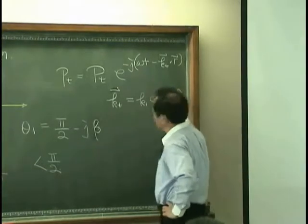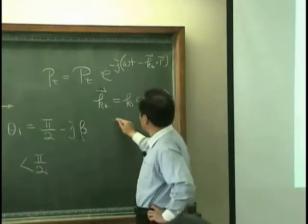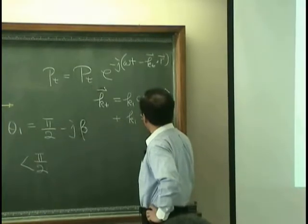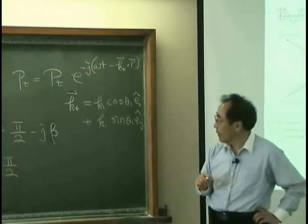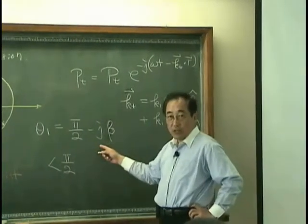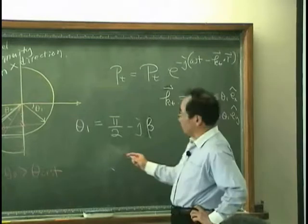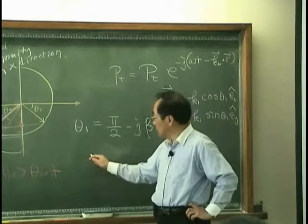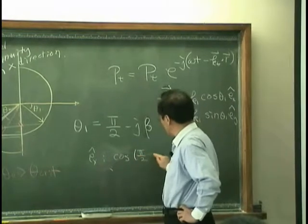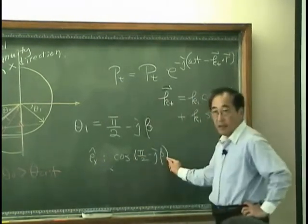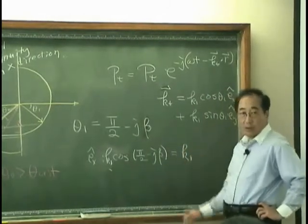Cosine theta 1. And I denote Ex is the unit vector in x direction. And then I can write another wave number vector in y direction like this: sine theta 1. And because theta 1 is pi over 2 minus j beta, then that means I have in x direction, Ex direction, I have cosine pi over 2 minus j beta K1, and that is what? K1, what is this? Yonghua.